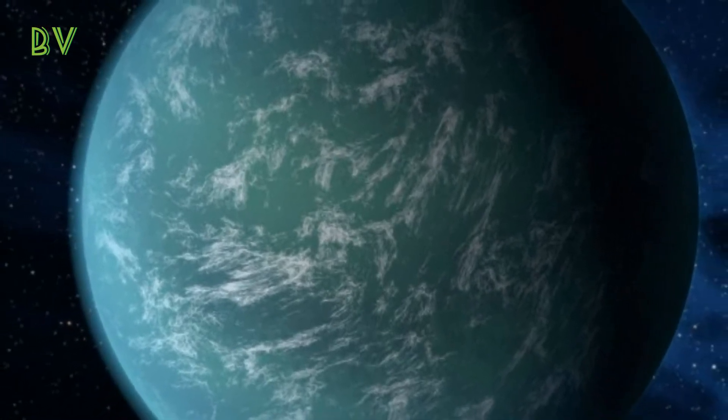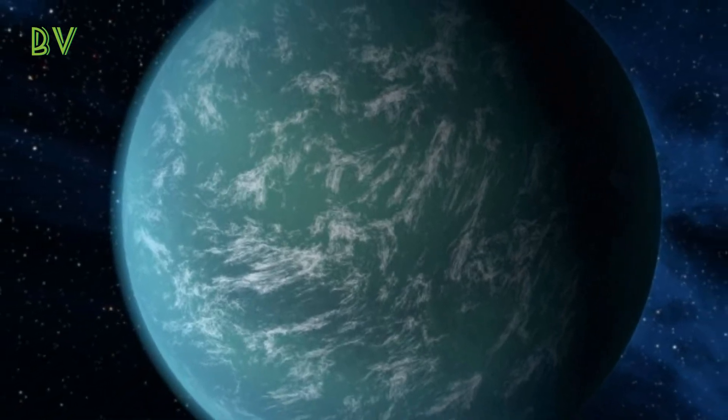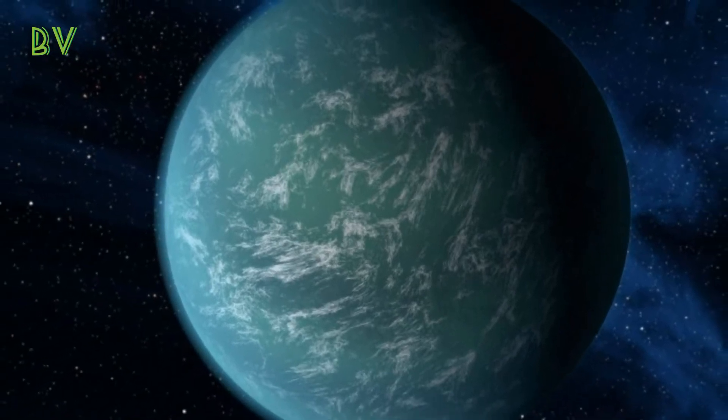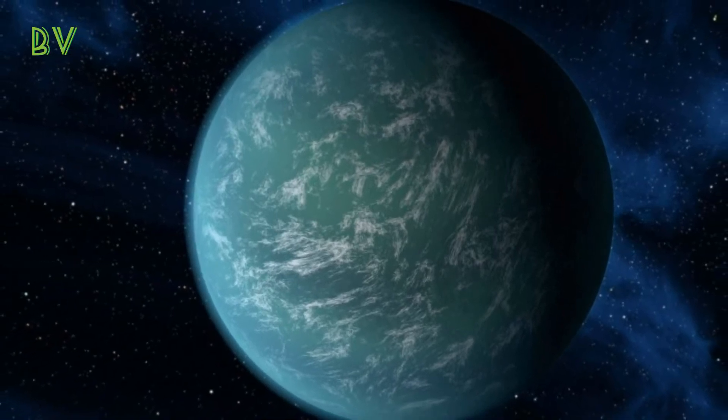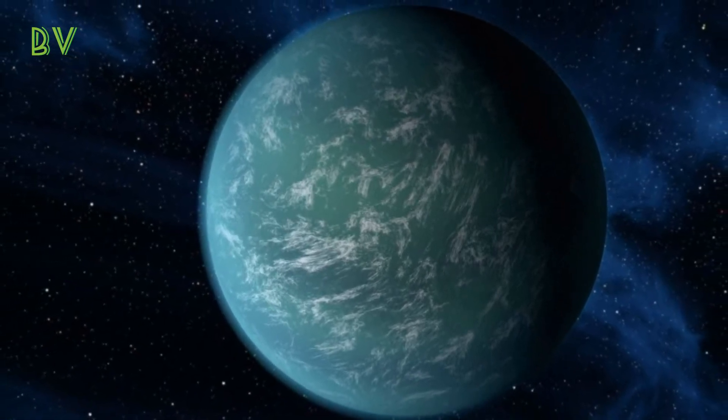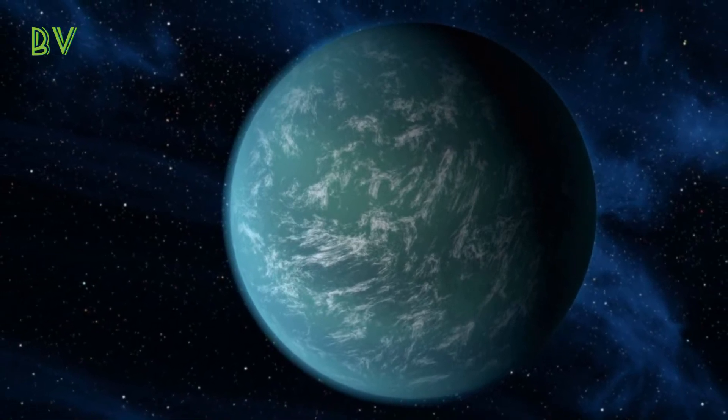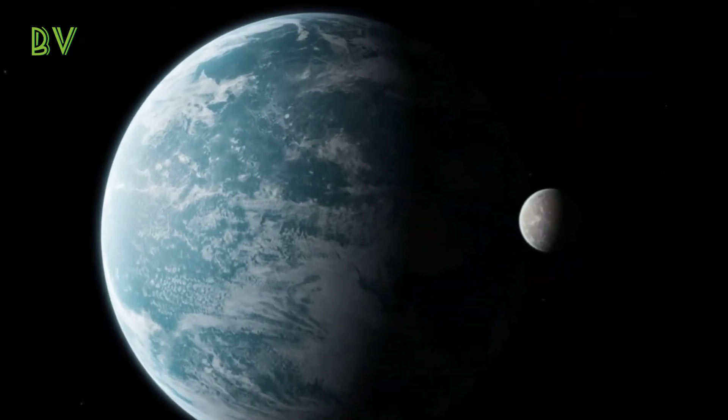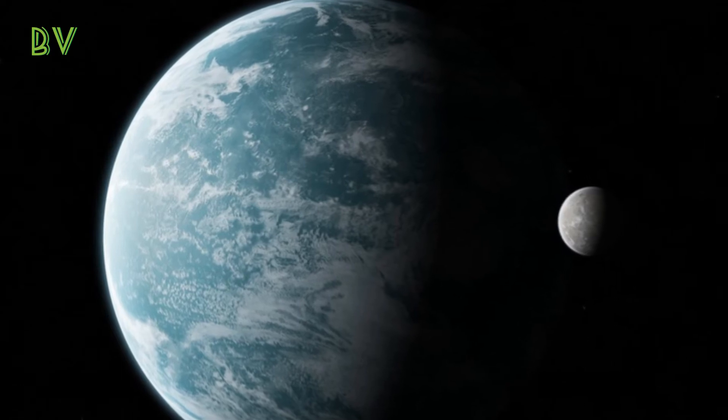Announced in 2011, Kepler 22b is estimated to be 2.4 times larger in diameter than Earth, with a comfortable average surface temperature of 72 degrees Fahrenheit (22 degrees Celsius). In the years since, however, investigators have debated how habitable it actually is. NASA first announced Kepler 22b as part of a set of 54 habitable planet candidates in February 2011.